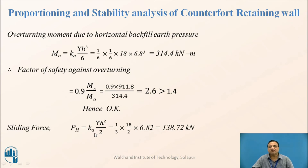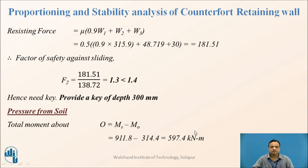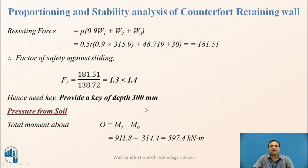Sliding force Ph = Ka × γ × H²/2 = (1/3) × 18 × 6.8²/2 = 138.72 kN. Resisting force is the frictional force = coefficient of friction × total weight = 0.5 × 0.9 × 394.65. Factor of safety against sliding = resisting force / Ph = 1.3, which is less than 1.4 as required by IS 456. Therefore, we need to provide a shear key of depth 300 mm to make it safe against sliding.